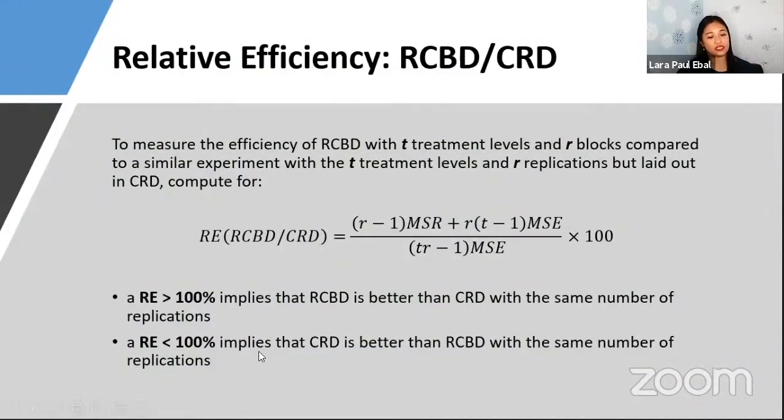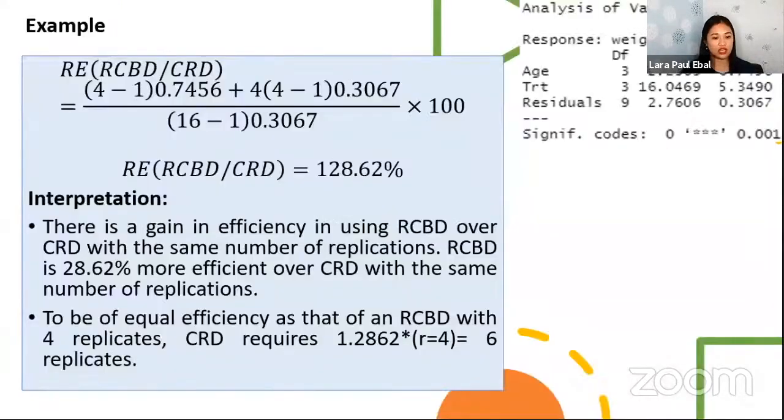And then if it's less than 100%, then this implies that CRD is better than the RCBD with the same number of replications. So let's have an example under this.